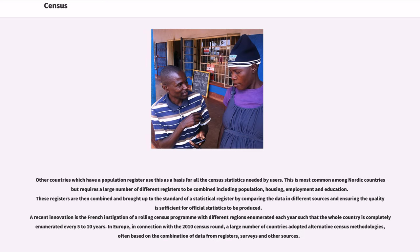Other countries which have a population register use this as a basis for all the census statistics needed by users. This is most common among Nordic countries but requires a large number of different registers to be combined, including population, housing, employment, and education. These registers are then combined and brought up to the standard of a statistical register by comparing the data in different sources. A recent innovation is the French rolling census program, with different regions enumerated each year such that the whole country is completely enumerated every five to ten years.